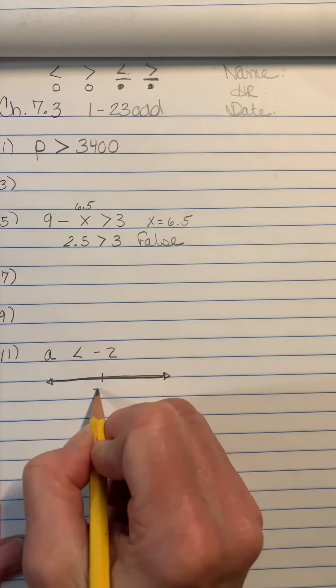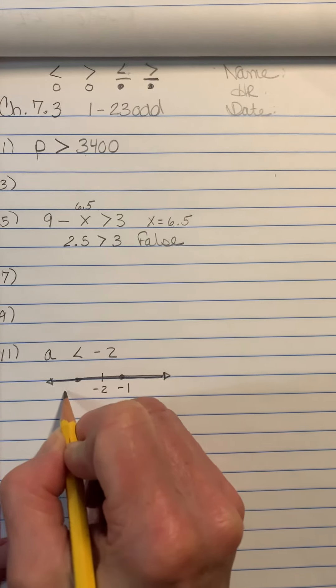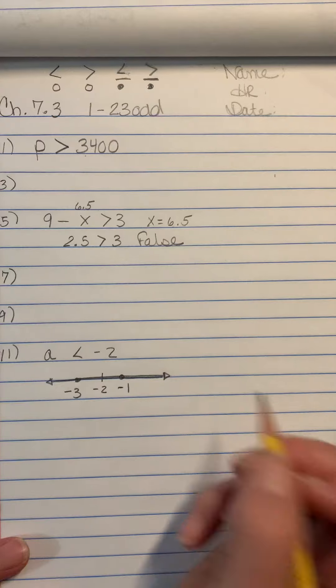Put that number down. Put a number to the right of it. And put a number to the left of it. So you just do it like that.